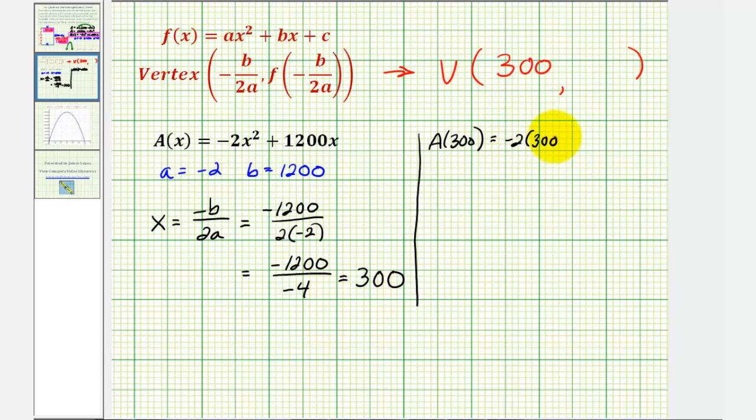Let's just show that we would get the same value. A of 300 would be equal to negative 2 times 300 squared plus 1,200 times 300.